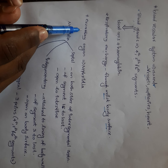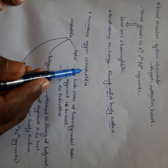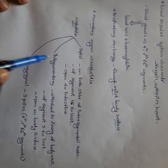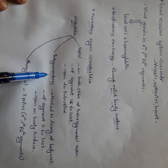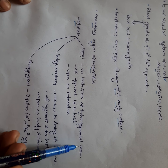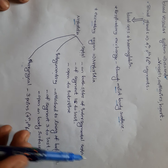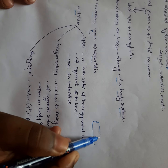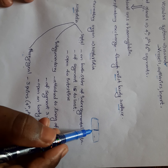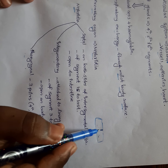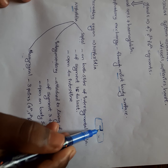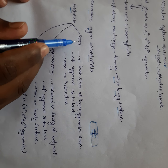Next, I am taking the excretory system. The excretory organ in earthworm is nephridia. Nephridia can be divided into three types: septal nephridia, integumentary nephridia, and pharyngeal nephridia. Septal nephridia are present on both sides of the intersegmental septa — the barrier between two compartments. Nephridia present on either side of this septa are called septal nephridia.